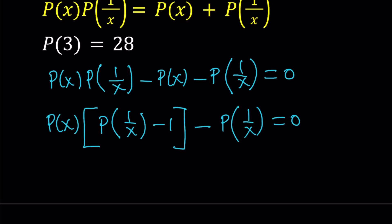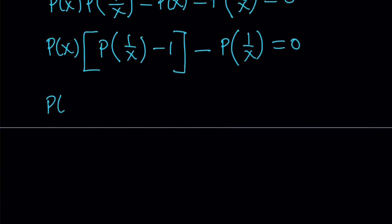But P of 1 over X has a negative sign in front of it. So instead of subtracting, we want to add 1 to both sides. So that's what we're going to do next. Let's go ahead and add 1, and that means 0 becomes 1.